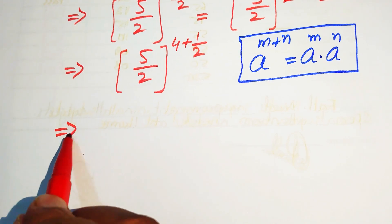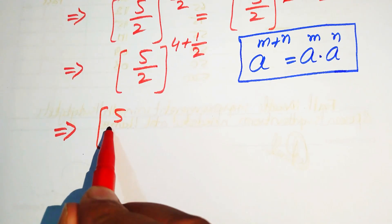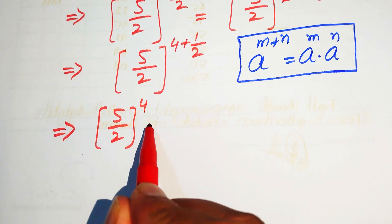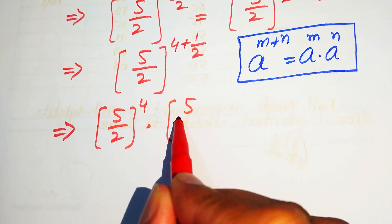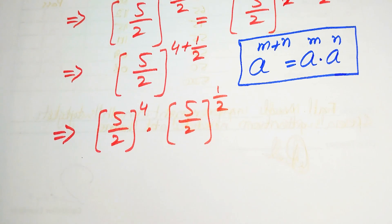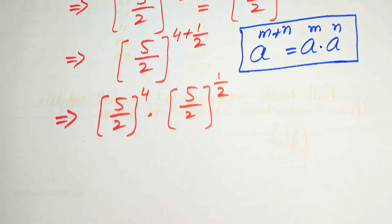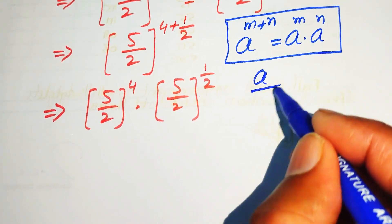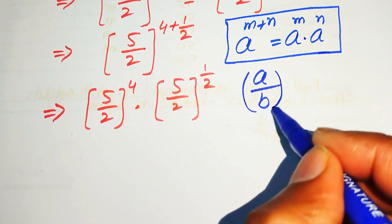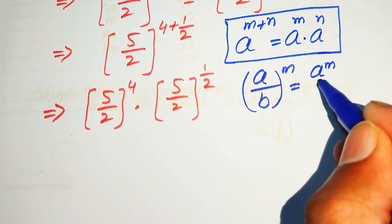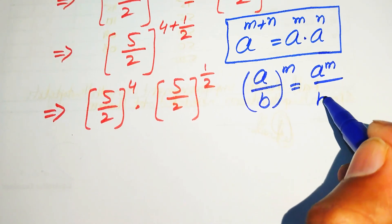According to this law, we write it as 5 over 2 to the exponent 4, multiplied by 5 over 2 to the power of 1 over 2. Now we need another exponential law: if you have a over b to the power of m, we write it as a to the power of m divided by b to the power of m.